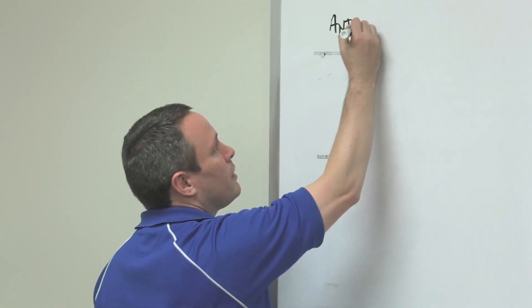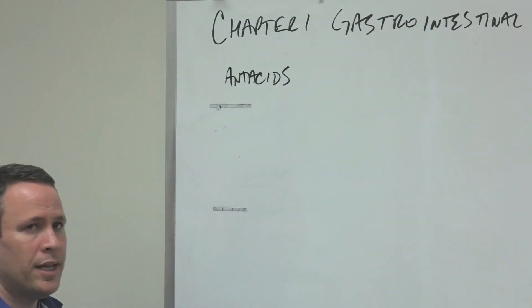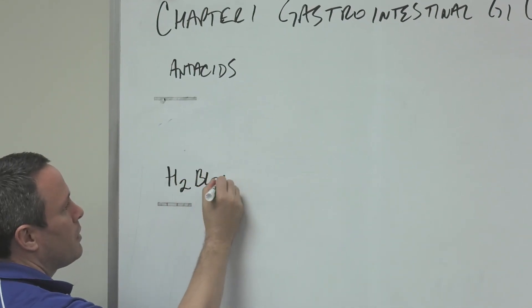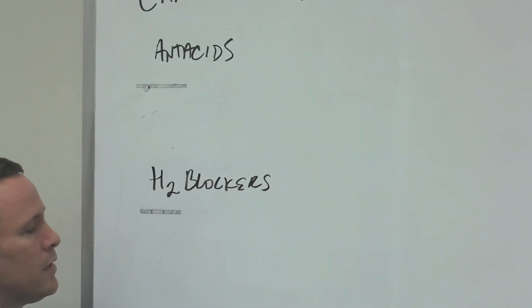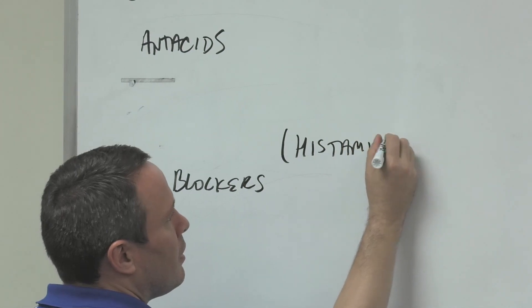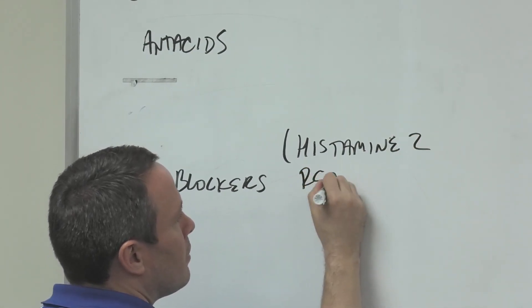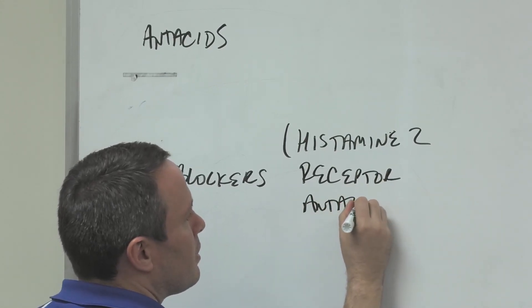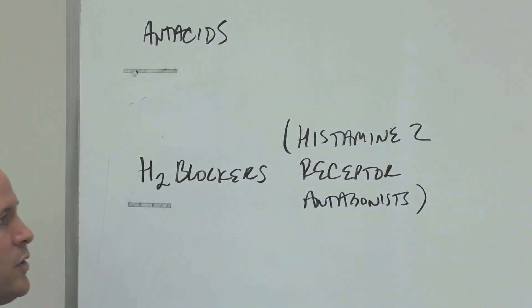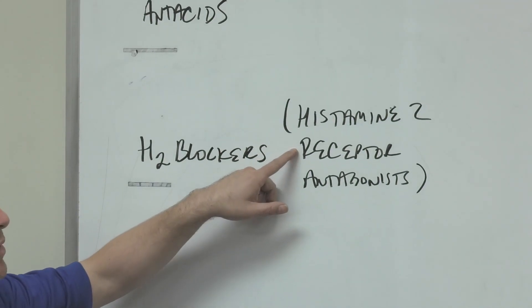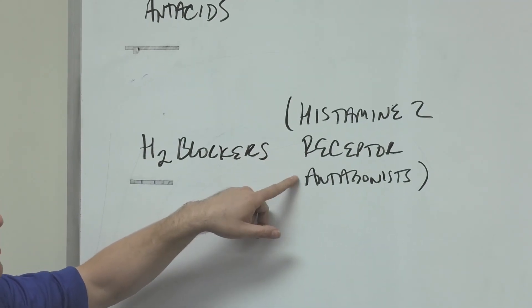Let's start with two drugs you're probably very familiar with - two antacids. Then from the antacids we're going to go to the H2 blockers, better known as histamine 2 receptor antagonists. There is a histamine 1 - that's the antihistamine you think of when you think of Claritin and things like that.